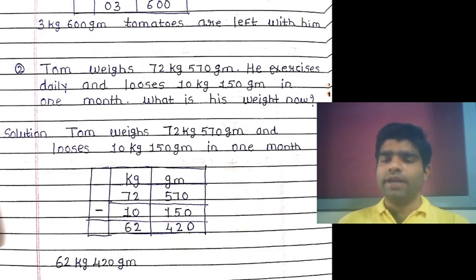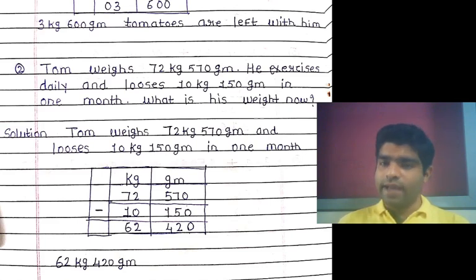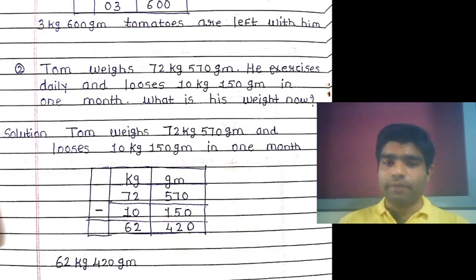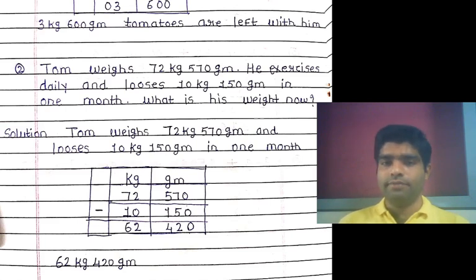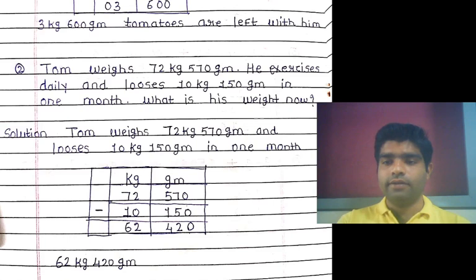Tom's initial weight was 72 kg 570 grams. He exercised daily and lost 10 kg 150 grams. By using subtraction, we solved the example. First arrange the column, then solve carefully — your calculation will be very easy and correct. Now let's move to the next example.